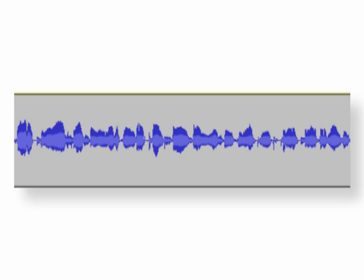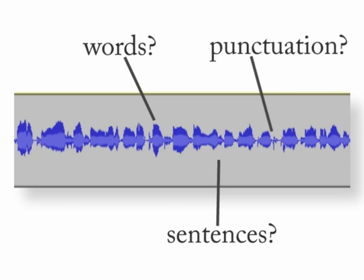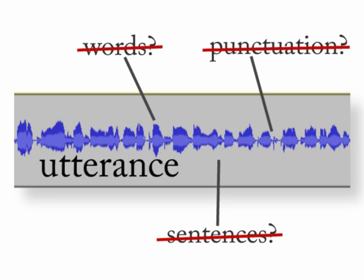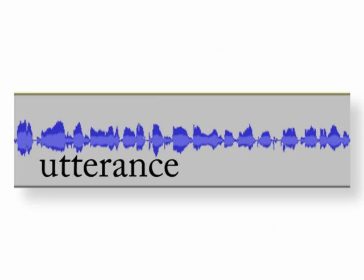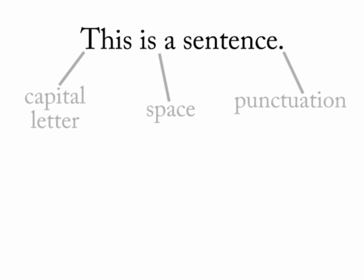It's important to consider that when we record speech or listen to speech, we don't actually find things like breaks between words or pauses between sentences. We don't hear punctuation or capital letters. Instead, we hear a very fluid stream of sounds. There's a linguistic term for that stream of sounds: an utterance. An utterance is a chunk of spoken language. The concept of utterances focuses on speech instead of squeezing spoken language into categories proper to written language like words, sentences, and paragraphs.